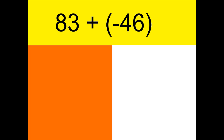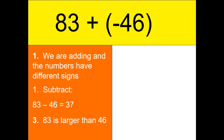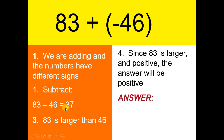Let's continue: 83 plus negative 46. These have different signs, so we will subtract them: 83 minus 46, which is 37. However, the larger number is 83 and it is positive. Then our final answer is positive 37.